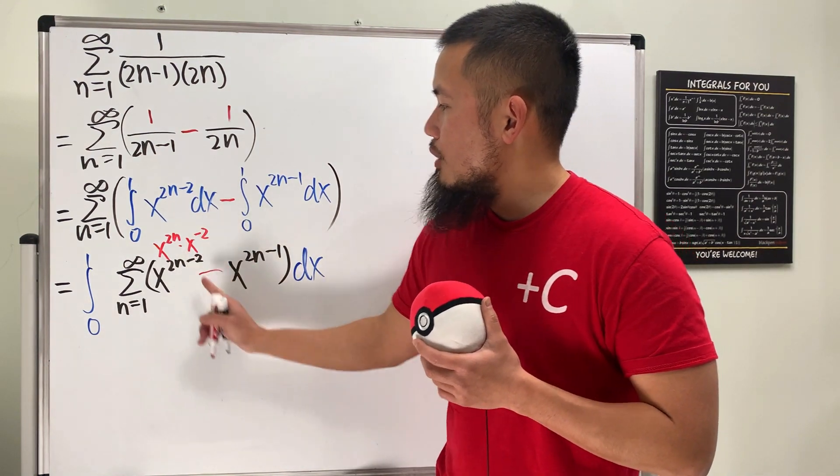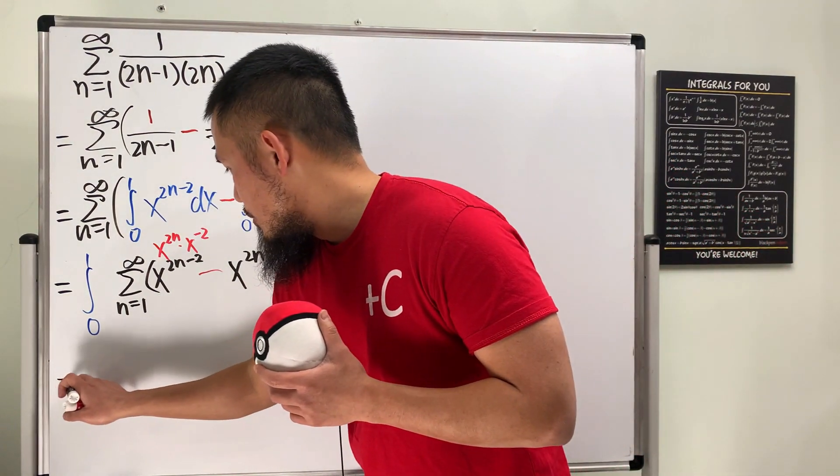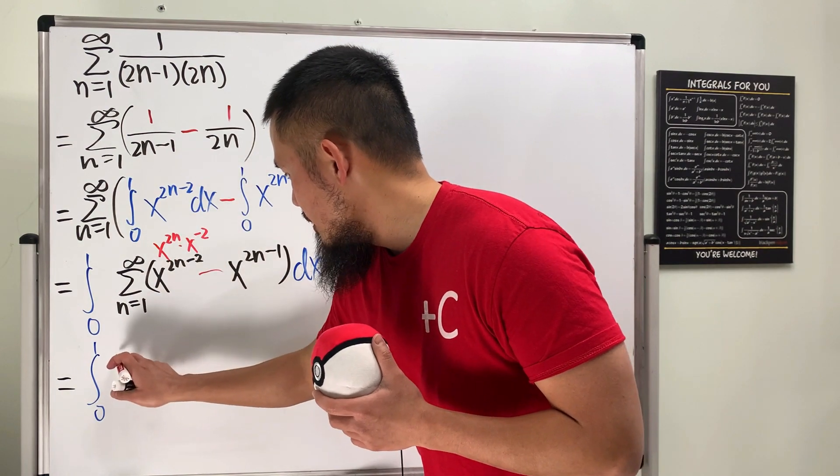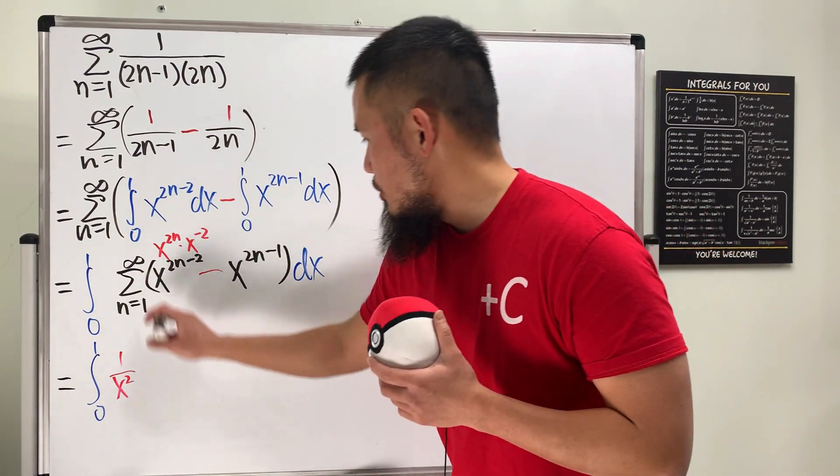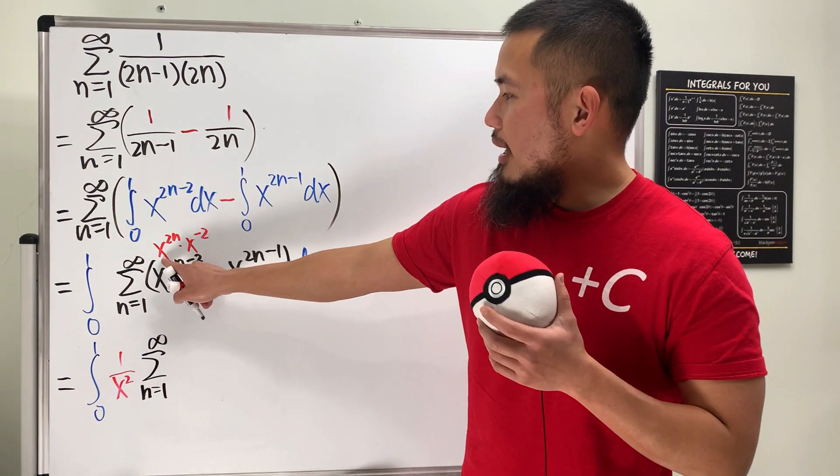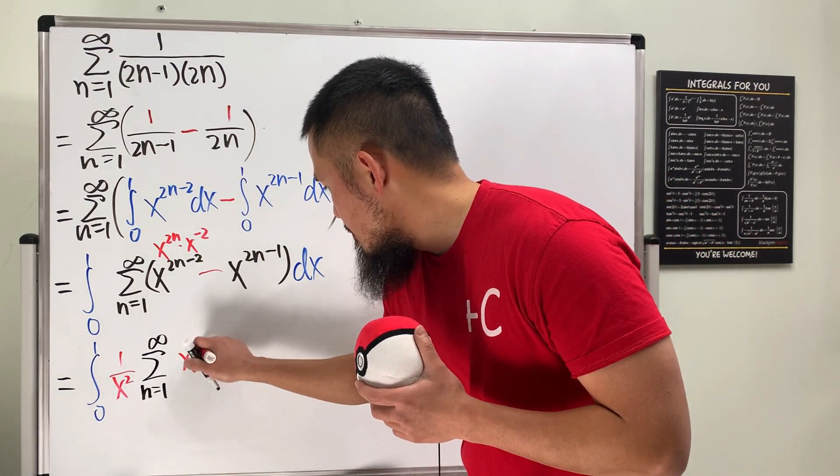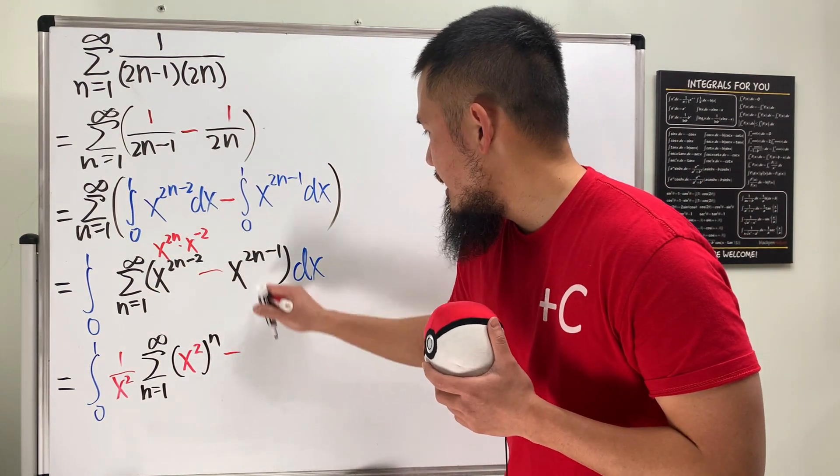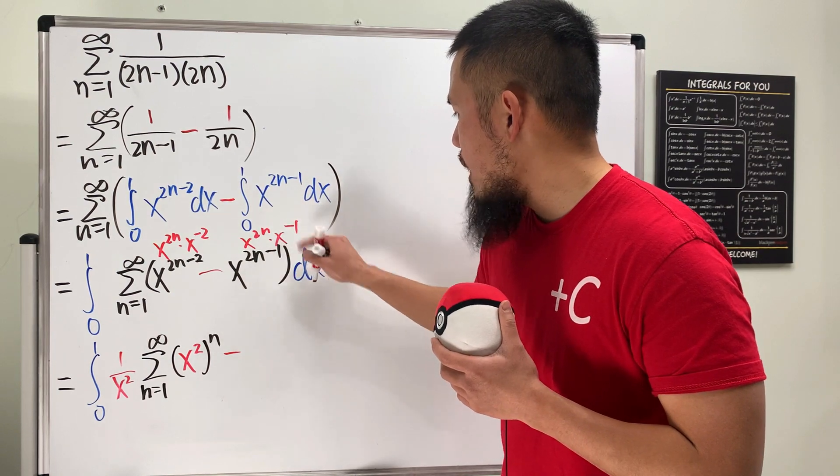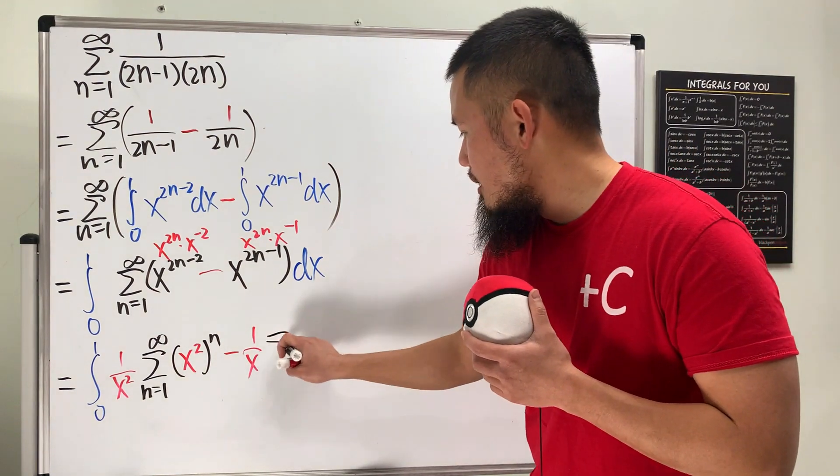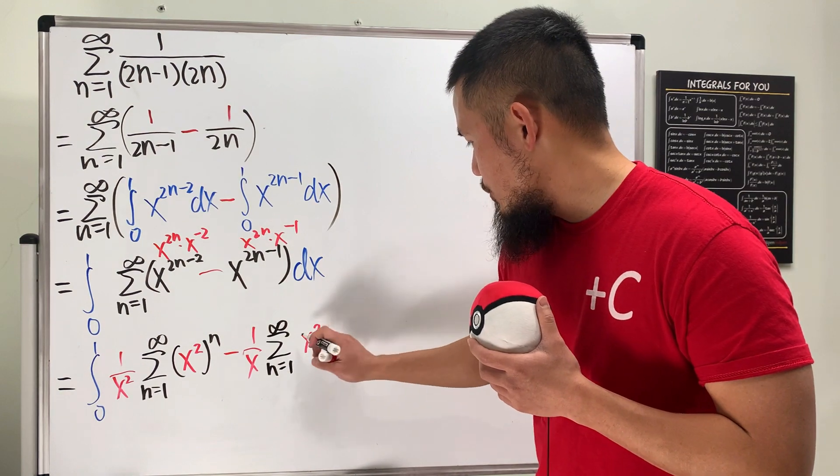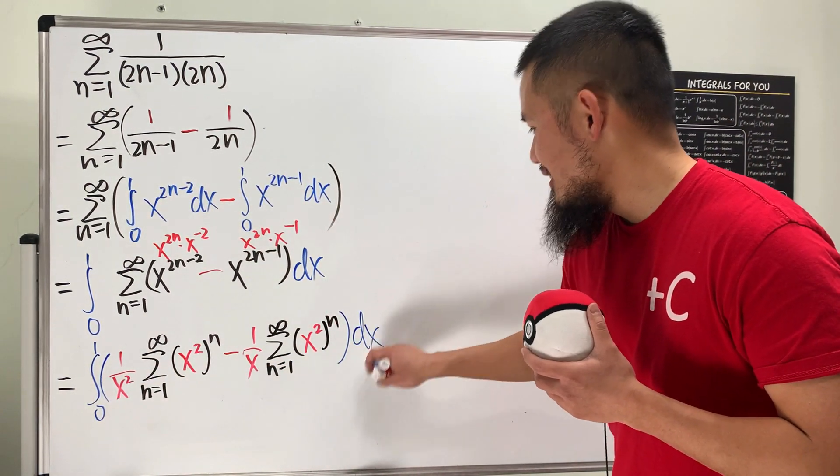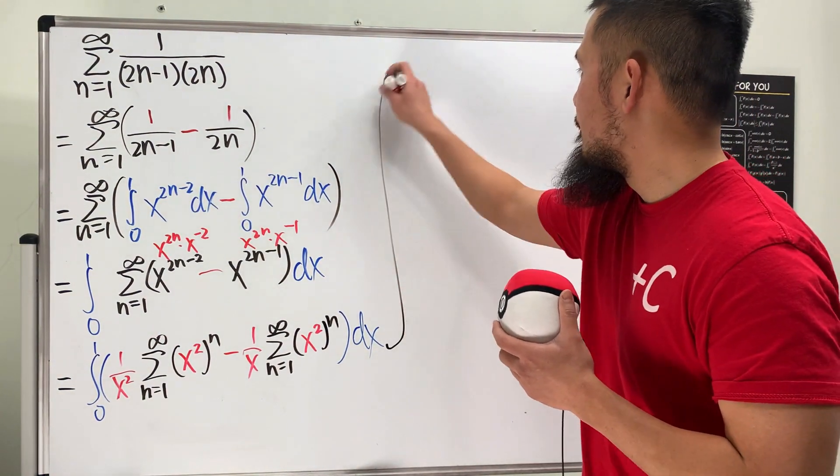I'm going to fix this. First off, this is x to the negative 2 power right here as well. Remember, this is the same as saying x to the 2n times x to the negative 2. And just like what I told you guys earlier, in the summation, only n matters. So what we can do is we can put the x to the negative 2 in the front of the summation. So this is going to look like we have the integral from 0 to 1. I will put this in the front, 1 over x squared. And then we have the summation. n goes from 1 to infinity. And then x squared raised to the n power.